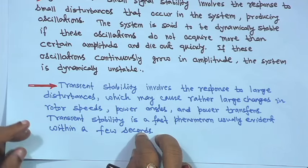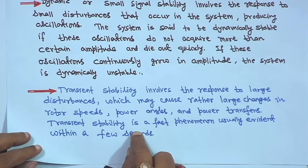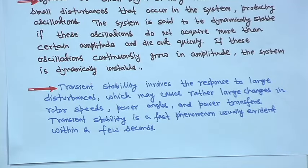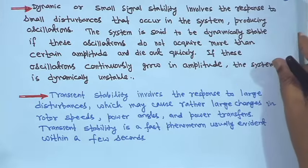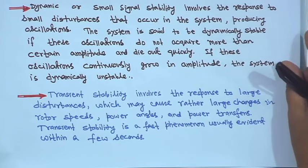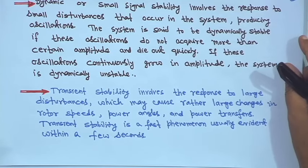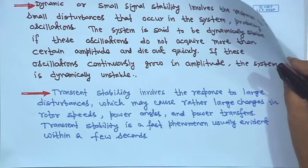Transient stability is basically within a few seconds. When such a fault occurs, it has to be cleared very quickly — it may be four cycles or six cycles. These are the three different types of stability: steady state stability, small signal or dynamic stability, and transient stability. Our concern for this course will be transient stability, and generally the single machine infinite bus system.